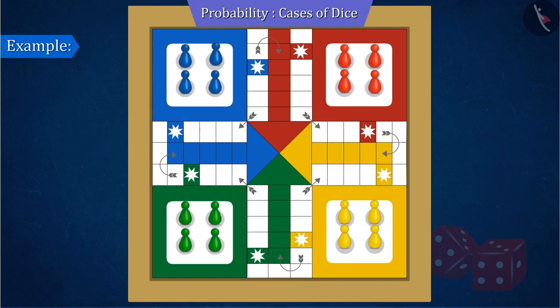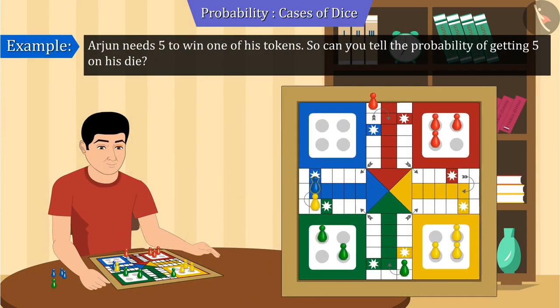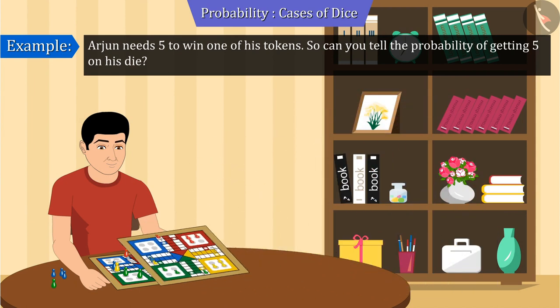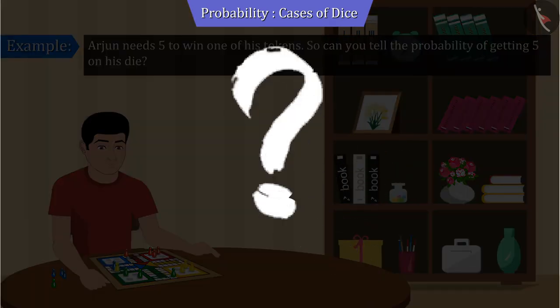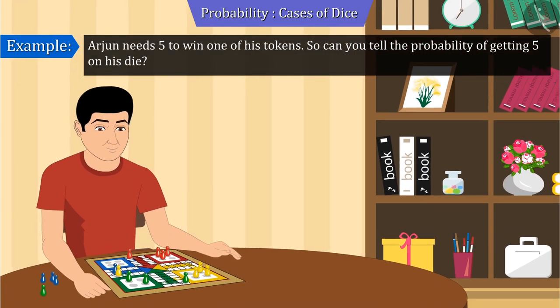All of you recognize die which are used in the game of Ludo. Look here, Arjun needs five to win one of his tokens. So can you tell the probability of getting five on the die? Let's now discuss this question.